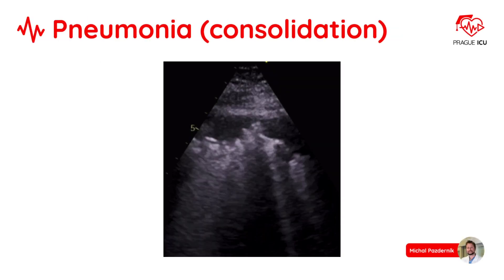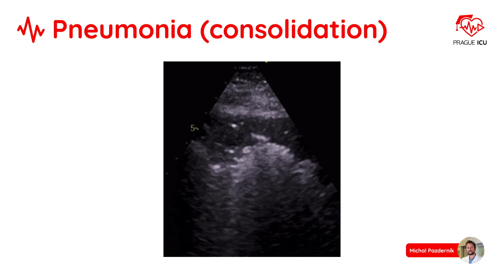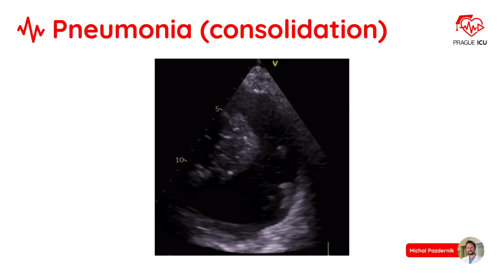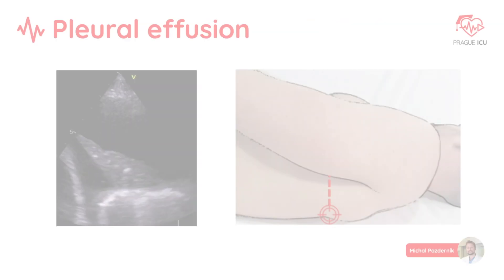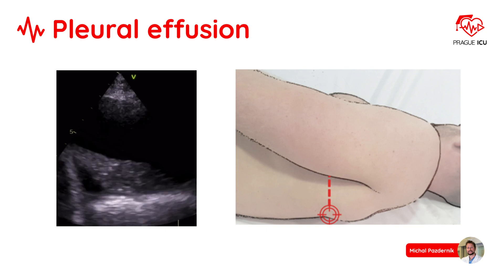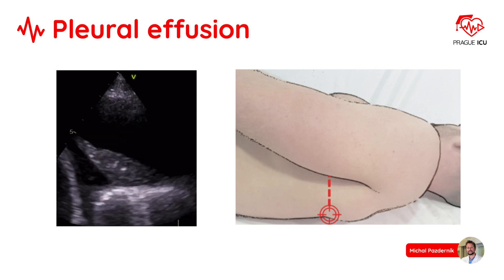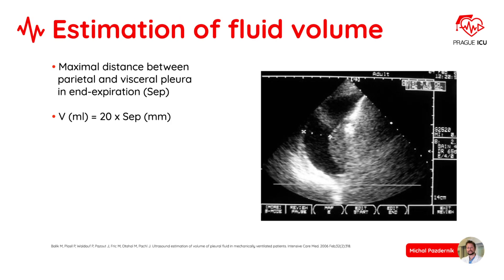On this image we can see an example of consolidation. Compared to normal lung, consolidation on ultrasound has a relatively hypoechoic, heterogeneous echo texture. Another image of lung consolidation here also shows a parapneumonic pleural effusion. For pleural effusion evaluation we always use the echo or abdominal probe. The maximum fluid may be appreciated at the PLAPS point — posterior and lateral alveolar and pleural syndrome point. For estimation of fluid volume we can use the formula: 20 times the maximal distance between parietal and visceral pleura in end expiration.